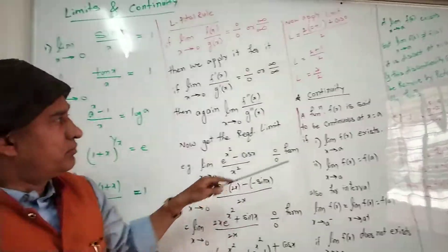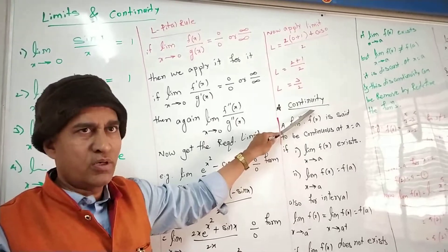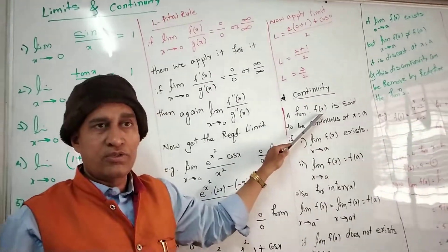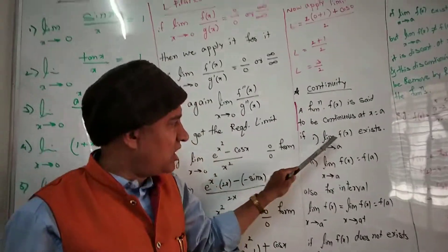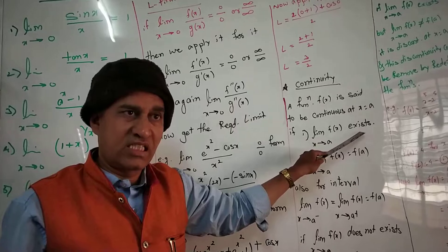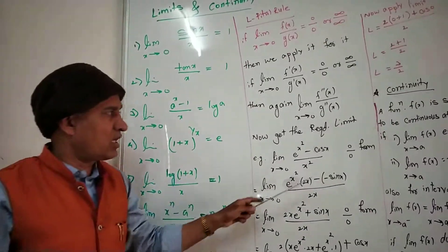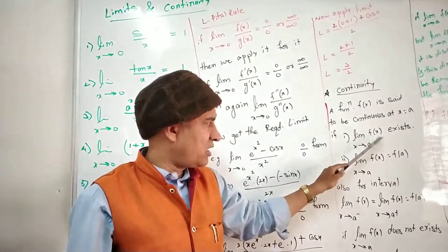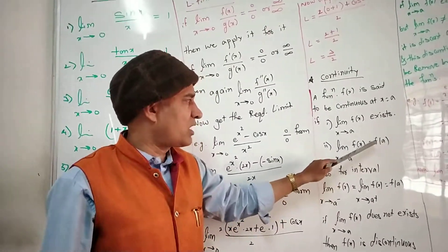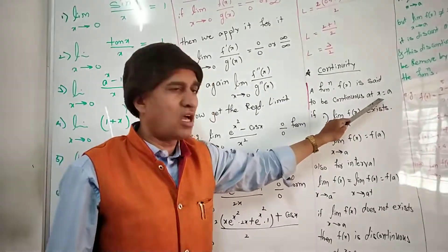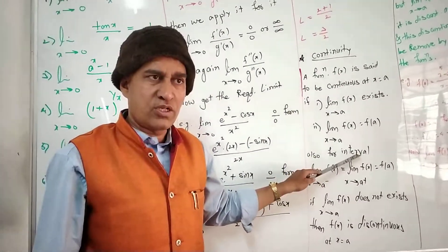By using limits we can test whether a function is continuous or discontinuous, and whether a discontinuity is removable or not. A function f(x) is said to be continuous at a particular point x = a if: first, lim x tends to a of f(x) exists — meaning the limit can be found using standard formulas or L'Hôpital's Rule — and second, that limit equals f(a).